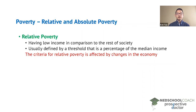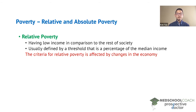For example, a country can set a threshold of 50% of the median income. This means that anyone who has an income that is less than 50% of the median income is in relative poverty.